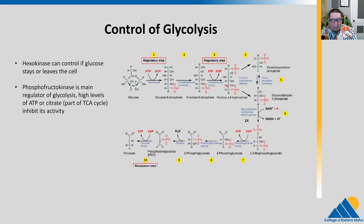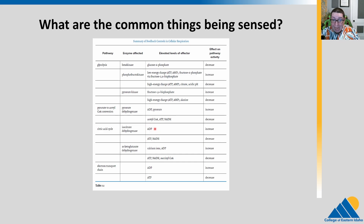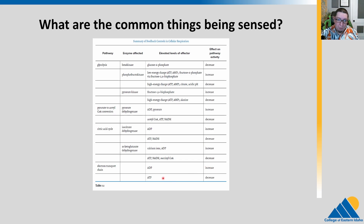So we have enzymes that sense the presence of certain molecules. Phosphofructokinase in glycolysis is sensing low energy levels — low ATP. When there's high AMP, there's not a lot of ATP around. We also look at ADP: if you have a high level of ADP, that means you don't have very much ATP, which means we need to increase the rate of metabolism in respiration. So we crank up the citric acid cycle. Same thing in the electron transport chain — if we have high levels of ADP, we increase activity. On the flip side, if we have high levels of ATP, we probably don't need to keep making more ATP, so we decrease the level of activity.